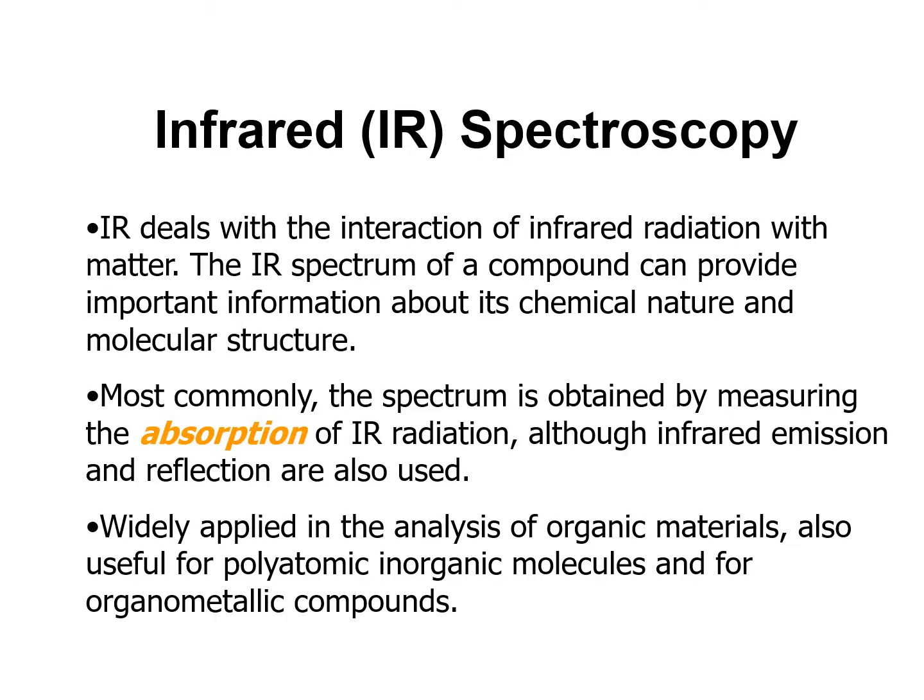Infrared spectroscopy deals with the interaction of infrared radiation with matter. The IR spectrum of a compound can provide important information about its chemical nature and molecular structure. Most commonly, the spectrum is obtained by measuring the absorption of IR radiation, although infrared emission and reflection are also used. It is widely applied in the analysis of organic materials, and is also useful for polyatomic inorganic molecules and organometallic compounds.